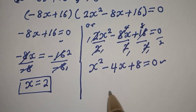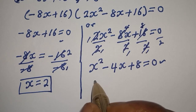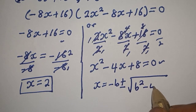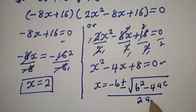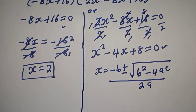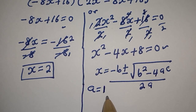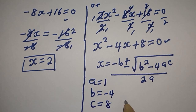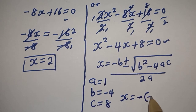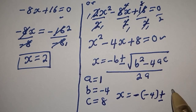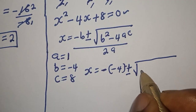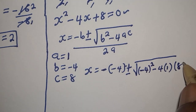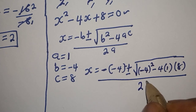This can be solved using the quadratic formula. Our quadratic formula is S is equal to minus b plus or minus the square root of b squared minus 4ac, over 2a. From this equation, a is equal to 1, b is equal to minus 4, and c is equal to 8. Let's substitute: S is equal to minus bracket minus 4, plus or minus square root of minus 4 squared minus 4 times 1 times 8, over 2 times 1.